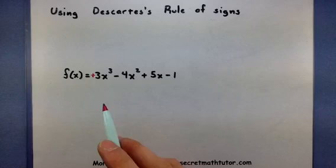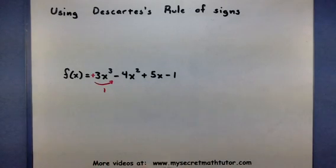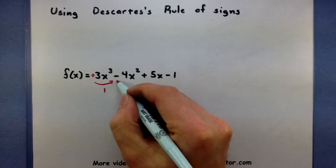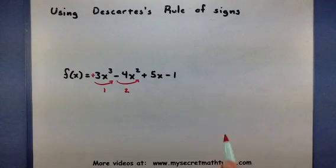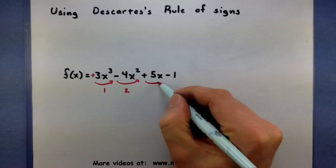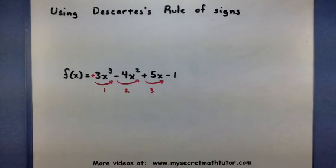Now let's count the sign changes. So here it's changing from positive to negative. There's one sign change. Looks like it changes from negative to positive. There's two sign changes. And looks like lastly it changes from a positive to a negative. So three sign changes.